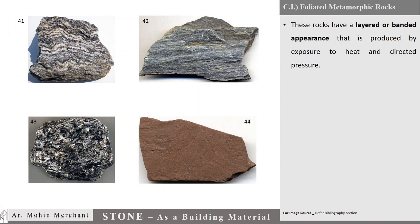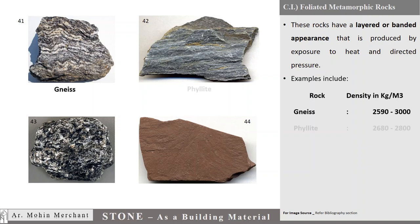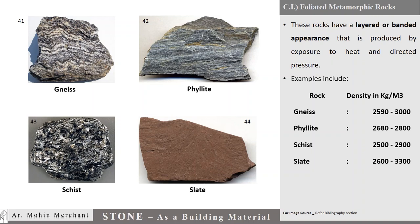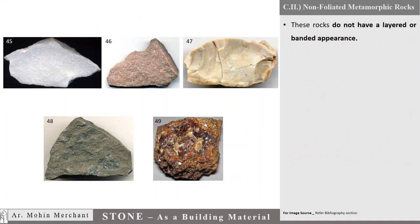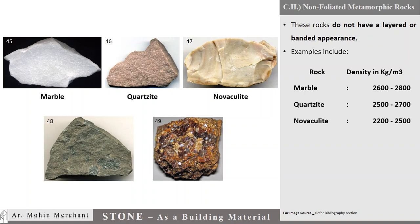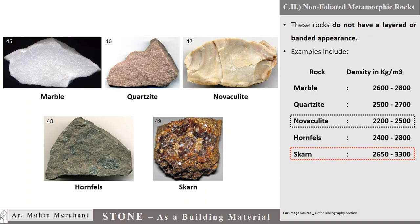Foliated metamorphic rocks have a layered or banded appearance that is produced by exposure to heat and directed pressure. Examples of non-foliated metamorphic rocks include Marble, Quartzite, Novaculite, Hornfels, and Schist. Density of these rocks varies from 2200 to 3300 kg per cubic meter.